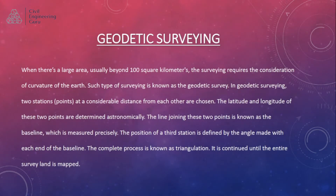When there is a large area, usually beyond 100 square kilometers, the surveying requires consideration of the curvature of the earth. Such type of surveying is known as geodetic survey. In geodetic surveying, two station points at a considerable distance from each other are chosen. The latitude and longitude of these two points are determined astronomically. The line joining these two points is known as the baseline, which is measured precisely. The position of a third station is defined by the angle made with each end of the baseline. This complete process is known as triangulation, and it is continued until the entire survey land is mapped.